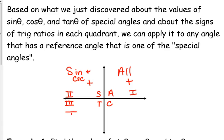T — teachers — tangent and its reciprocal cotangent are positive in the third quadrant. Everything else is negative. And in the fourth quadrant, cosine and its reciprocal secant are positive. Everything else is negative.